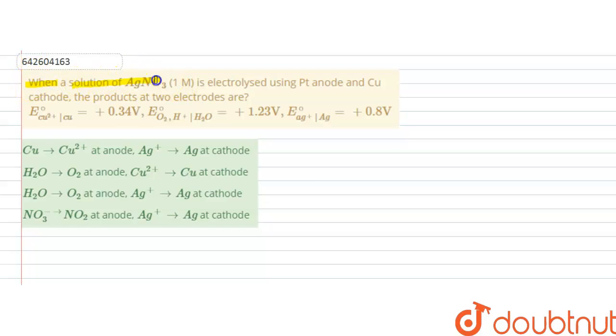...a solution of silver nitrate 1 molar is electrolyzed using platinum anode and copper cathode, the products at two electrodes are given.